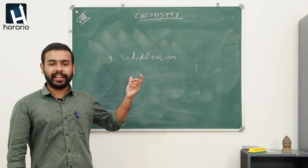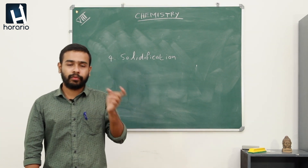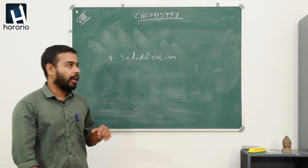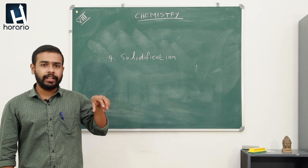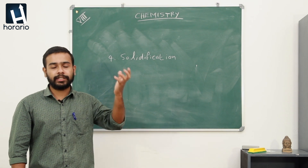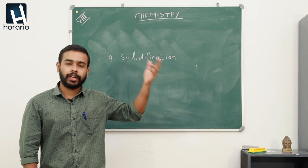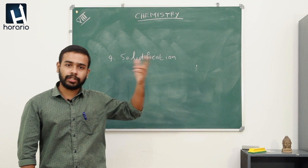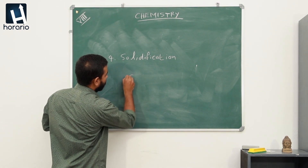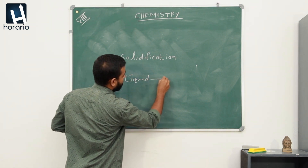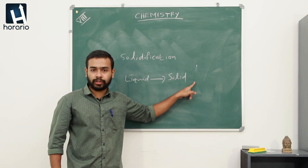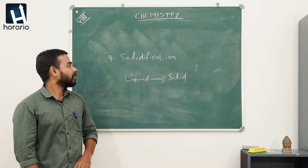The fourth one is solidification. Solidification is the process of changing of a substance from its liquid state into solid state. For example, water filled in ice cube containers is placed inside the refrigerator — after some time it becomes ice cubes, meaning water turns into ice. Liquid changes into solid. It is easy to remember: something becoming solid is solidification.